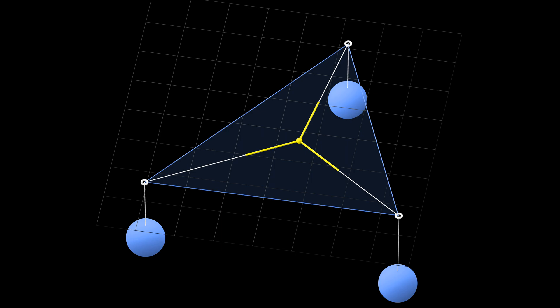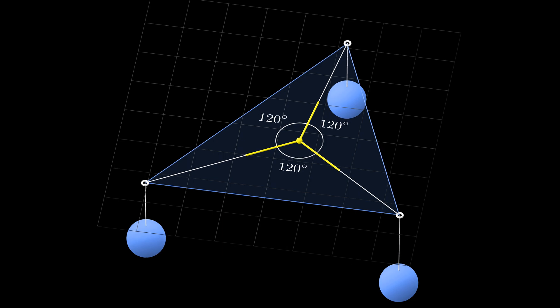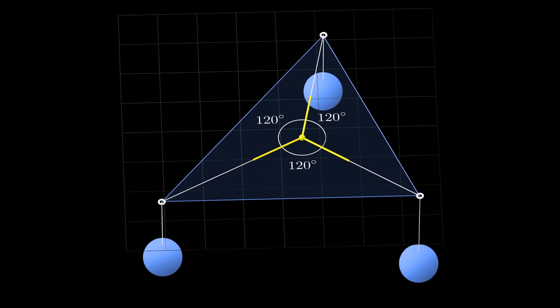It means that the sum of any two vectors is equal to the negative of the third vector. It is possible only if the angle between any two vectors equals 120 degrees.